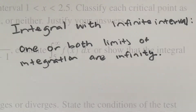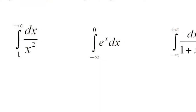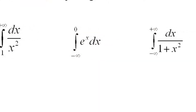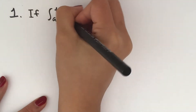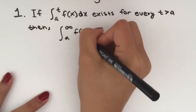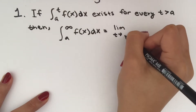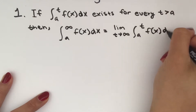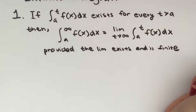The first type of improper integral we're going to look at is one with an infinite interval, where one or both limits of integration are infinity. There are essentially three cases. The first is that if the integral from a to t of f dx exists for every t greater than a, then the integral from a to infinity of f dx equals the limit as t approaches infinity of the integral from a to t of f dx, provided that the limit exists and is finite.